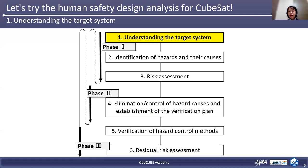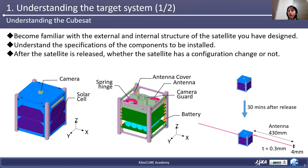The first step is understanding the target system. You need to understand the external and internal shape of the satellite you are designing and what kind of components will be installed. For example, solar cells are mounted on the outer panel of the satellite on plus/minus X and Y panels for power supply, and a camera is mounted on the plus Z panel. The six boards are layered and four batteries are mounted on the bottom layer. You also need the detailed specification information for the components. Additionally, you need to consider any configuration changes after satellite deployment — for example, two deployable antennas that will be deployed 30 minutes after the satellite is released.